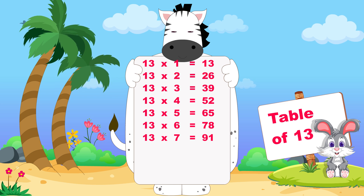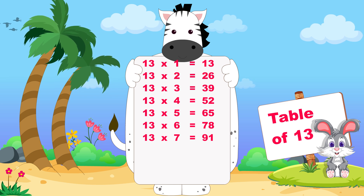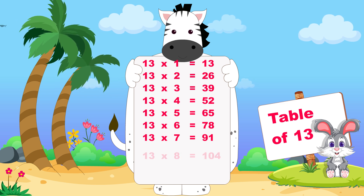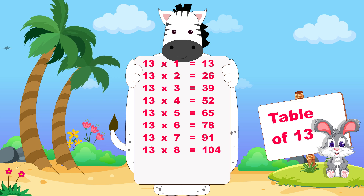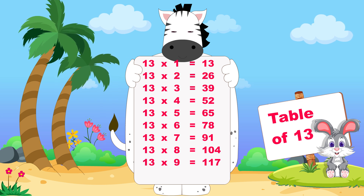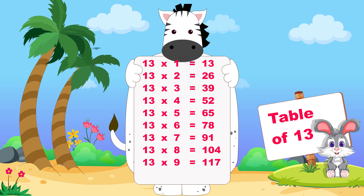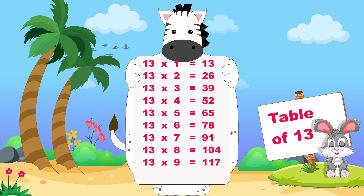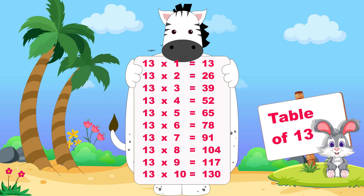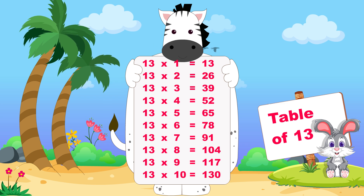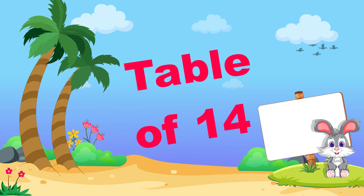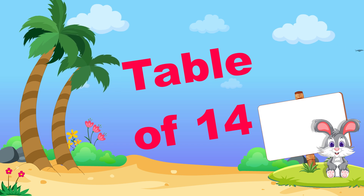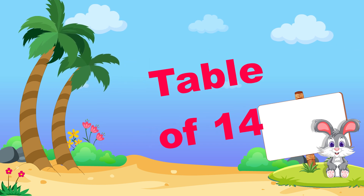Thirteen sevens are ninety-one, thirteen eights are one hundred four, thirteen nines are one hundred seventeen, thirteen tens are one hundred thirty.